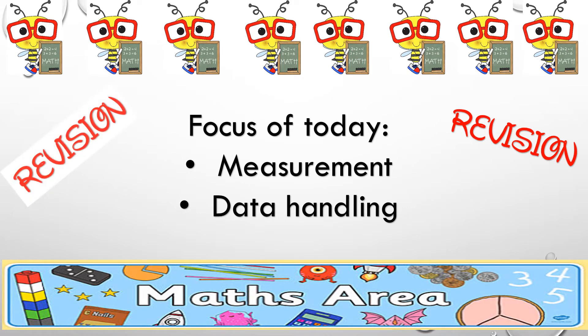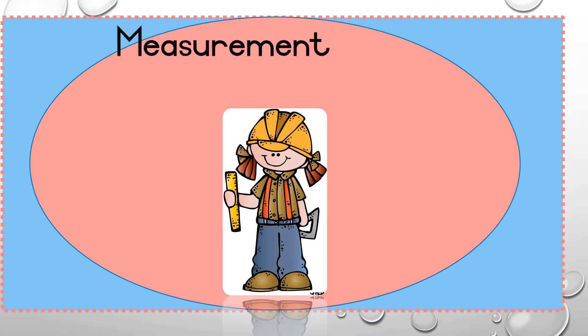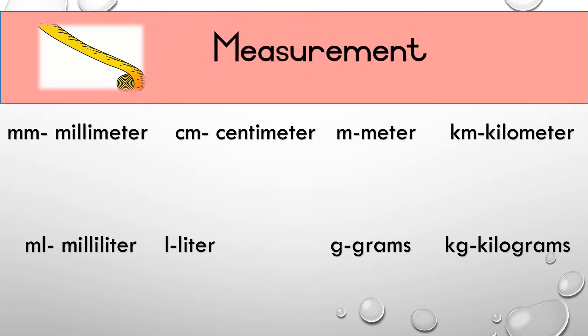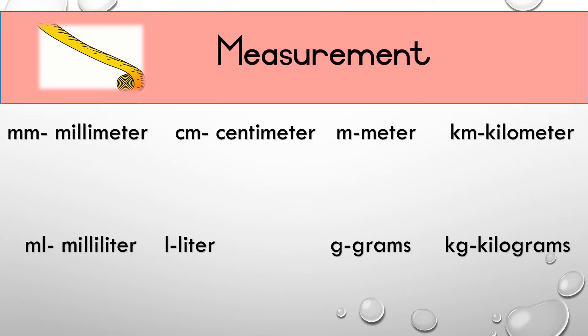We will focus on measurement and data handling. Firstly, we will look at measurement. There are a few concepts that we need to address when we think of measurement: the abbreviations and what they stand for, and what do we measure using that specific measurement. The first one is millimetre — something that is very small, like an eraser or your pencil. The abbreviation for that is MM for millimetre.